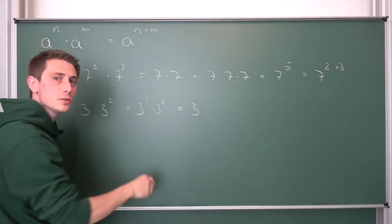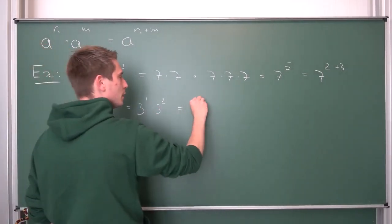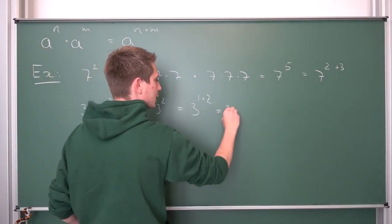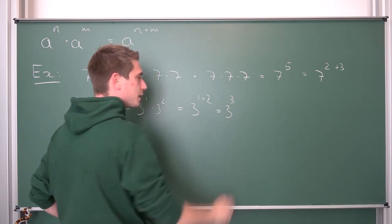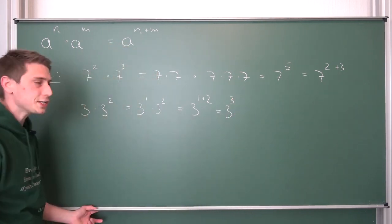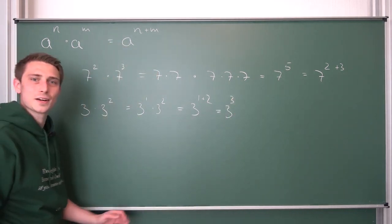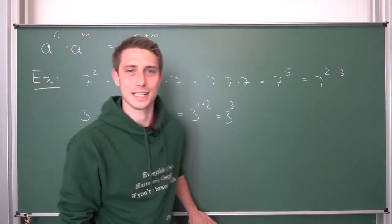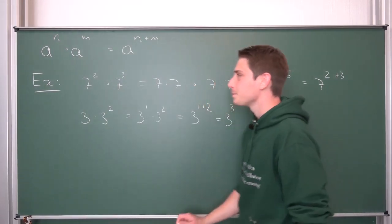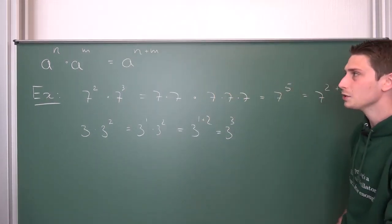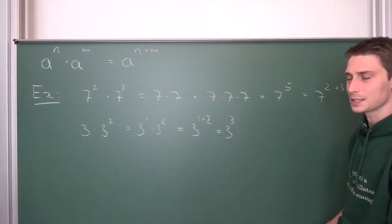So we take the exponents 1 and 2 and add them together. 1 plus 2 gives us exactly 3. This is 3 cubed — worked out, nice! And this is basically all you need to know about this.